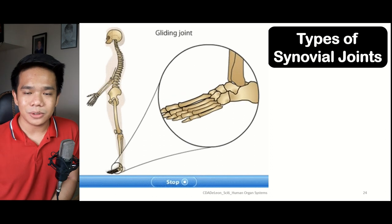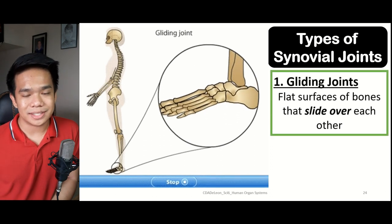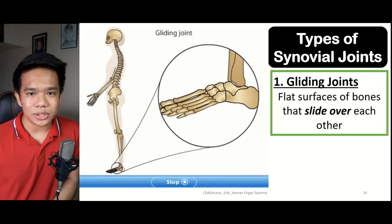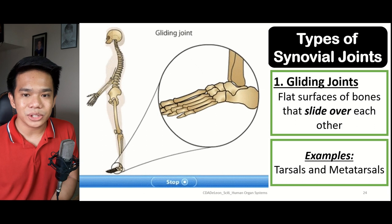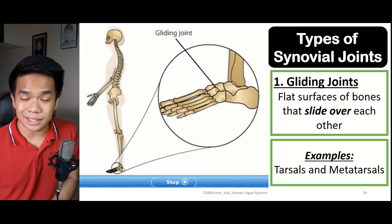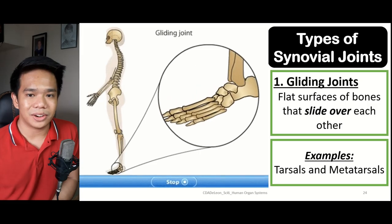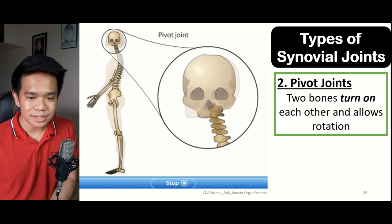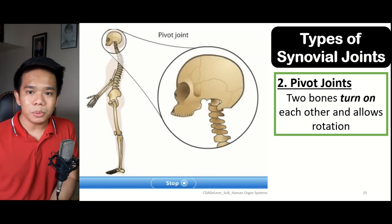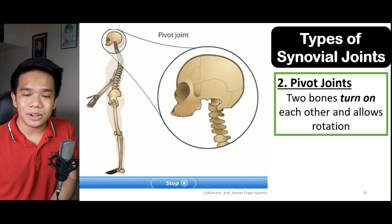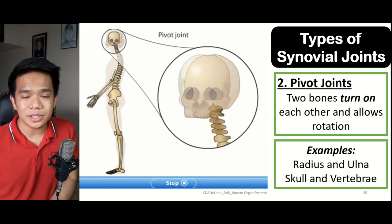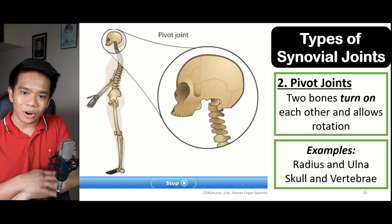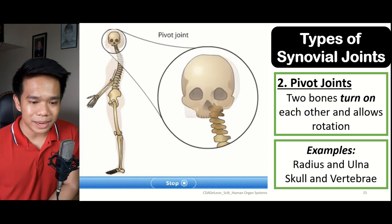Starting with the gliding joints — two flat bones slide over each other. The best example of gliding joints are the bones within the foot, including the tarsals and the metatarsals. Next, we have the pivot joints, where two bones turn on each other, allowing a rotation movement. Best examples are the radius and ulna in the lower arm, and the skull and the vertebrae.